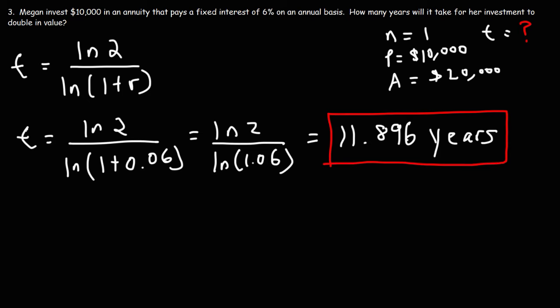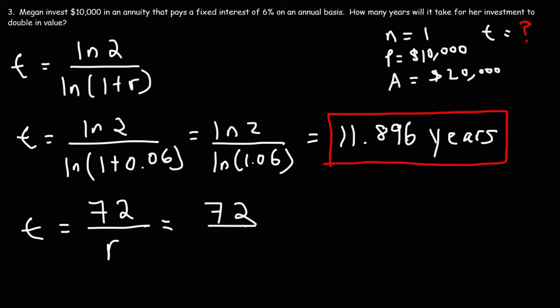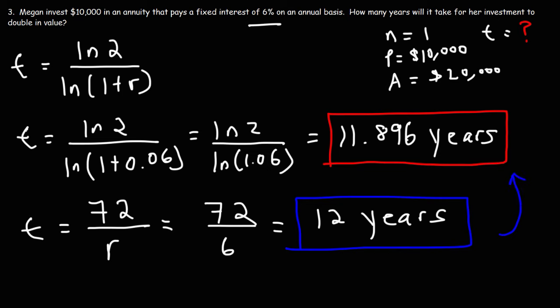You can get a quick estimate using what is known as the Rule of 72. According to the Rule of 72, the time it takes to double equals 72 divided by the interest rate as a percentage — not as a decimal. So we take 72 divided by 6, not 0.06. 72 divided by 6 is 12, and we can see this formula gives a good approximation: 11.896 years is approximately 12 years.